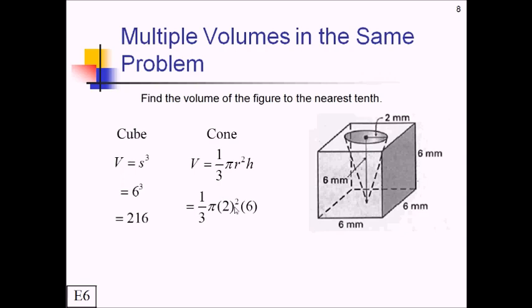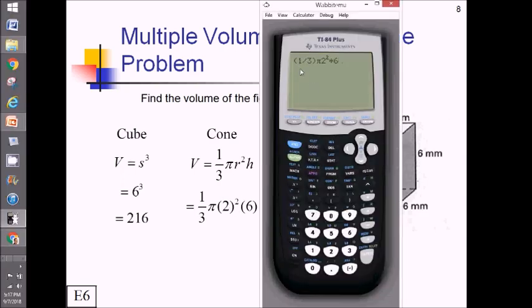I'm just going to do this on the calculator because they said nearest tenth so I can round off. So I've got 1/3 times π times 2 squared times 6. It comes out to 25 point. I'm going to go out two decimals. They wanted nearest tenth for the final answer, so I'm going to go one extra decimal out on all my intermediate steps.